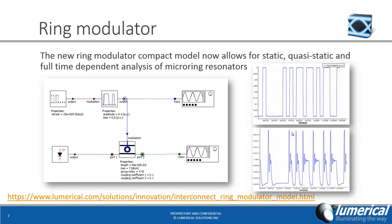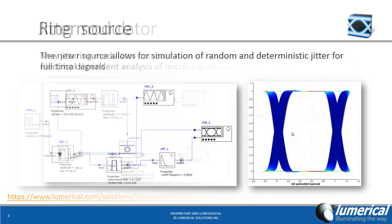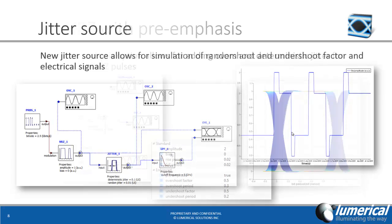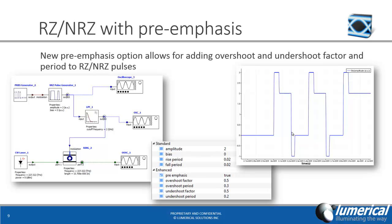The new dynamic ring modulator allows for static, quasi-static, and full time-dependent analysis of micro-ring resonators. There's also a new jitter source that allows for simulation of random and deterministic jitter for electrical signals. And new pre-emphasis options have been added for overshoot and undershoot factor and period for return-to-zero and non-return-to-zero pulses.